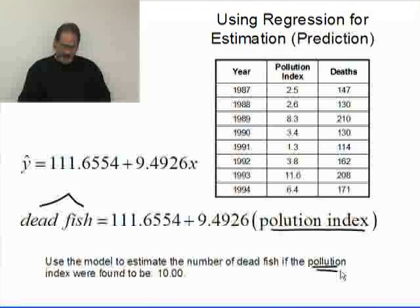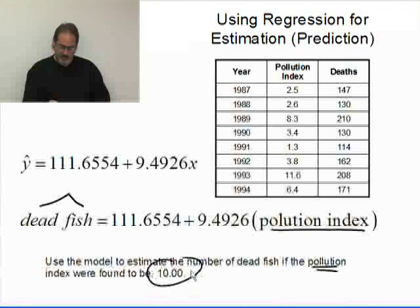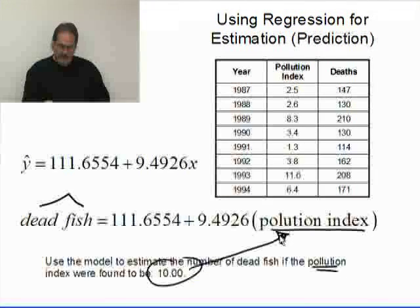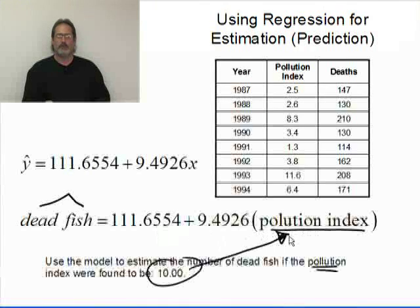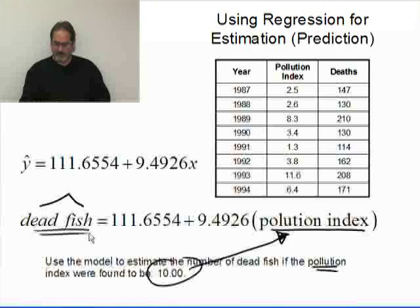We want to use this model to estimate the number of dead fish if the pollution index were found to be 10. Take the value of 10, substitute it in for pollution index, do the arithmetic, and the value you get is your estimate for the number of dead fish.